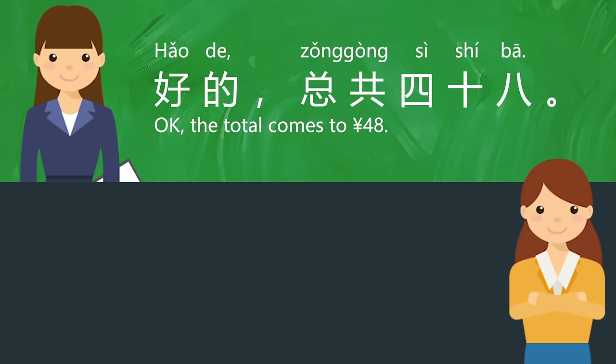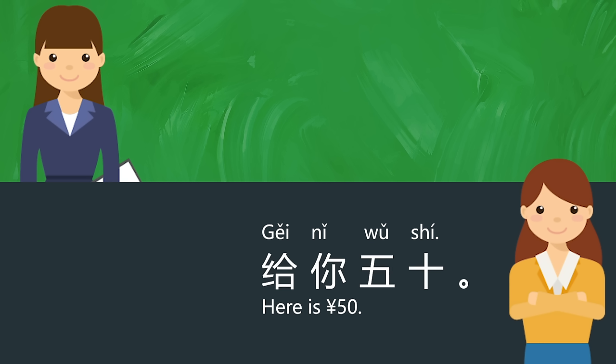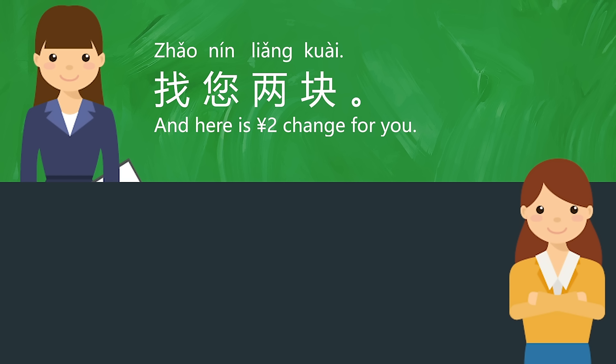您好！您要点什么？我要一个鸡肉汉堡，一份薯条，还要一杯可乐。就这些吗？就这些。好的，在这吃还是带走？带走。好的，总共四十八。给你五十。找您两块。